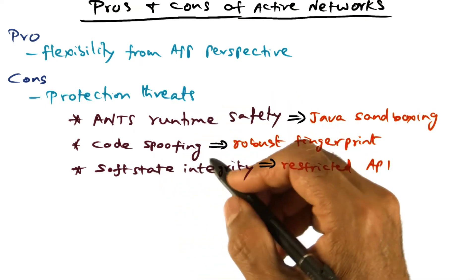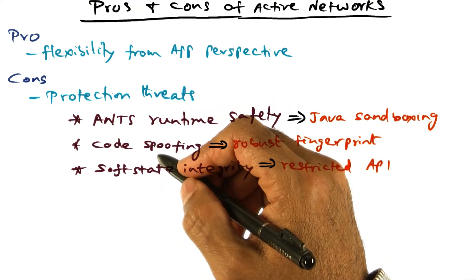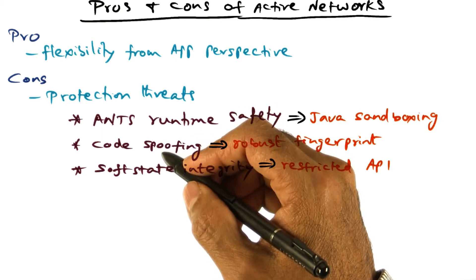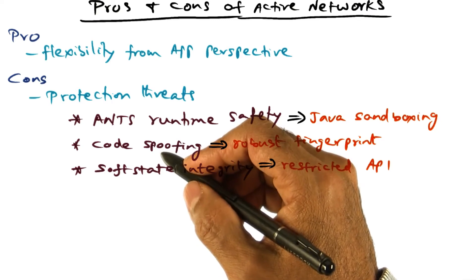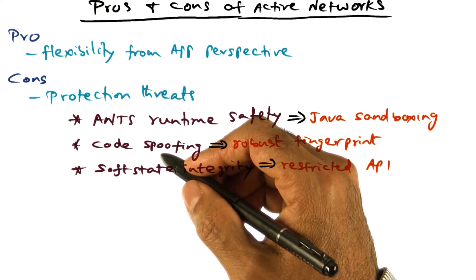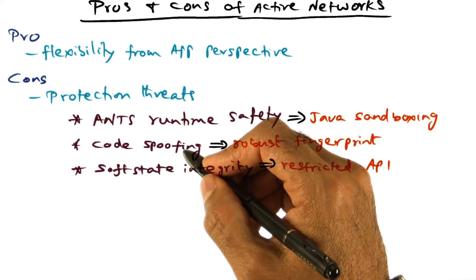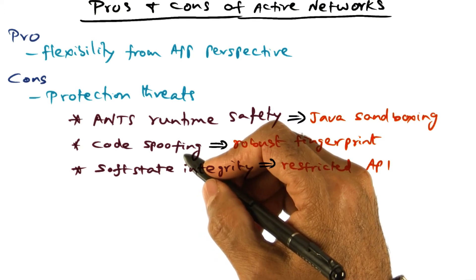The second protection threat is whether there could be code spoofing that can happen. We are talking about code being injected into the router, and of course there was a good reason for doing that, that I wanted a certain behavior to be observed by the network routers in response to packets flowing through the network that belongs to me. But I want to be sure that the code that is being executed is the code that I wrote, not some malicious code that has been spoofed to that node.